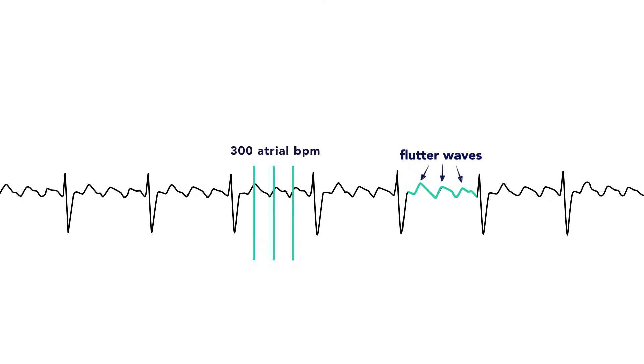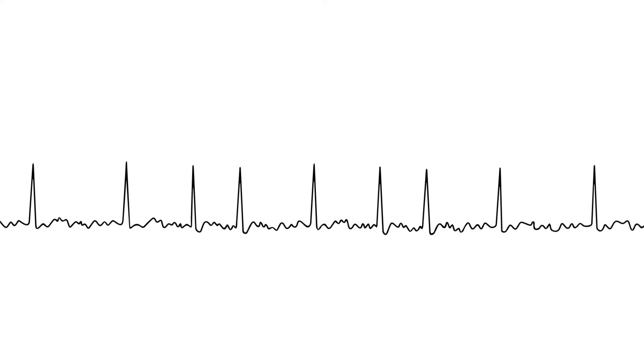So each of these bumps you see here represent atrial depolarization occurring at mostly regular intervals. This is in contrast to the erratic atrial depolarization you see with atrial fibrillation.